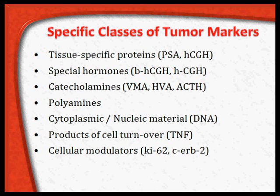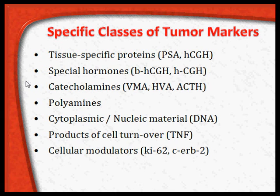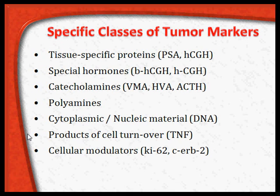Further specific classes of tumor markers include tissue-specific proteins like PSA, special hormones like beta-HCG, catecholamines like vanillylmandelic acid and ACTH, and polyamines or nuclear material like DNA as products of cell turnover. In tumor mass, enormous cell multiplication and turnover can result in tumor necrosis factor alpha. Cell modulators such as HER2 antigens can also be identified as tumor markers.